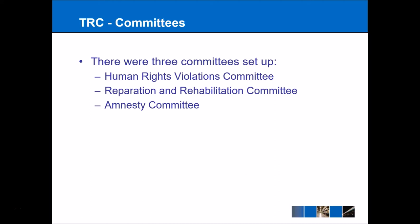Within the Truth and Reconciliation Commission, there were three committees that were set up, each with their own mandate. The Human Rights Violations Committee investigated human rights abuses that took place between 1960 — the date of the Sharpeville Massacre — and 1994. Meanwhile, the Reparation and Rehabilitation Committee was charged with restoring victims' dignity and formulating proposals to assist with rehabilitation. Finally, the Amnesty Committee was probably the most controversial out of all of these — it considered applications for amnesty that were requested in accordance with the provisions of the Act.